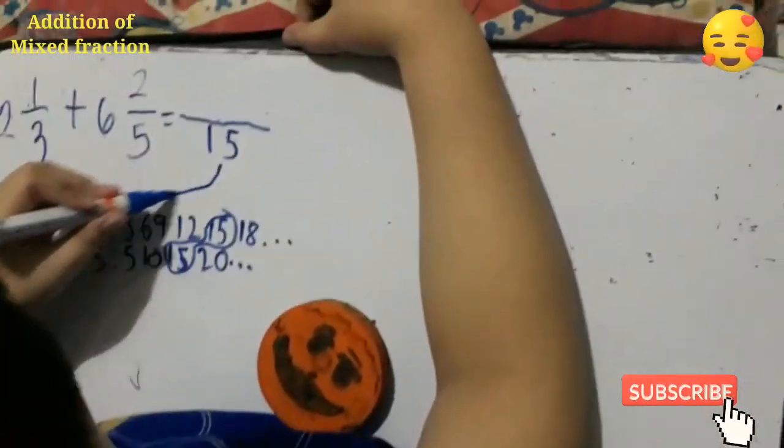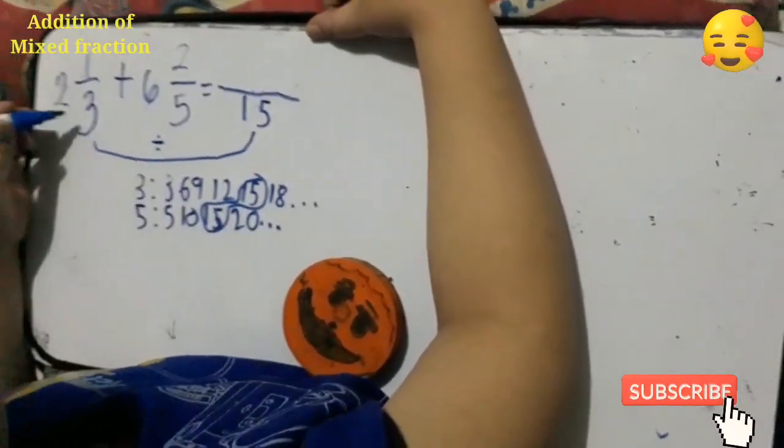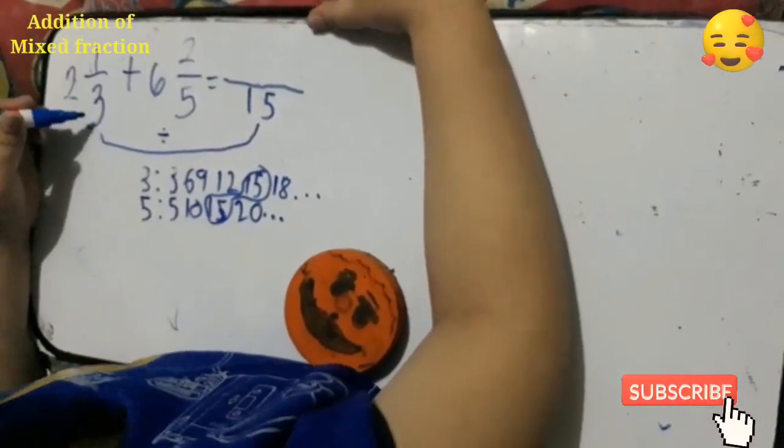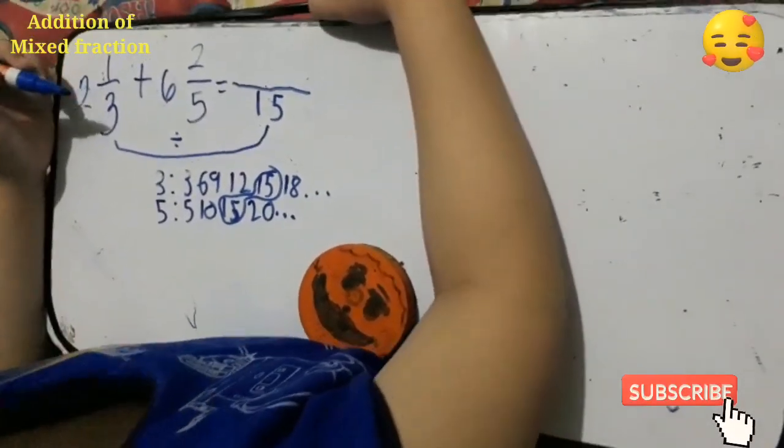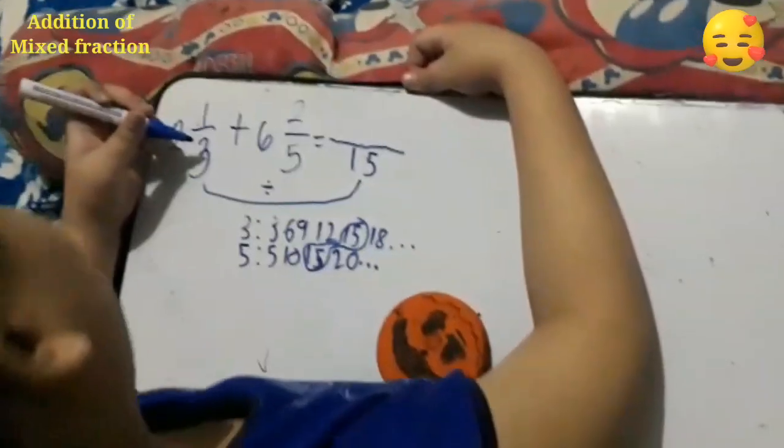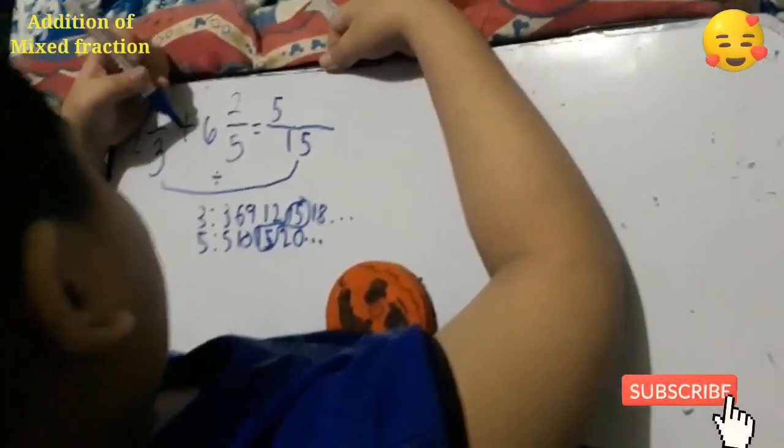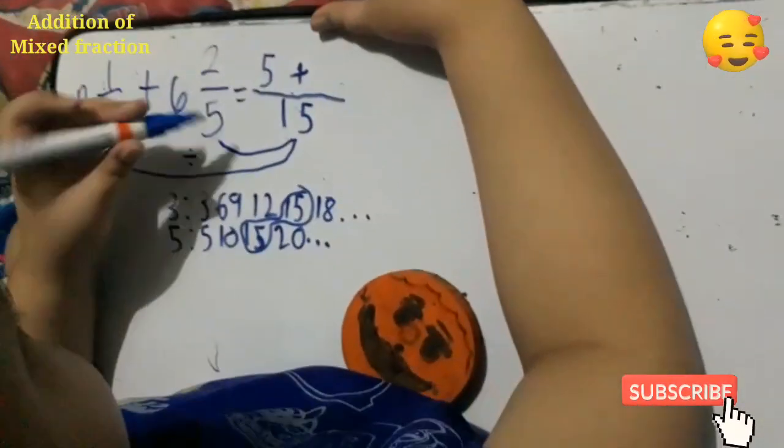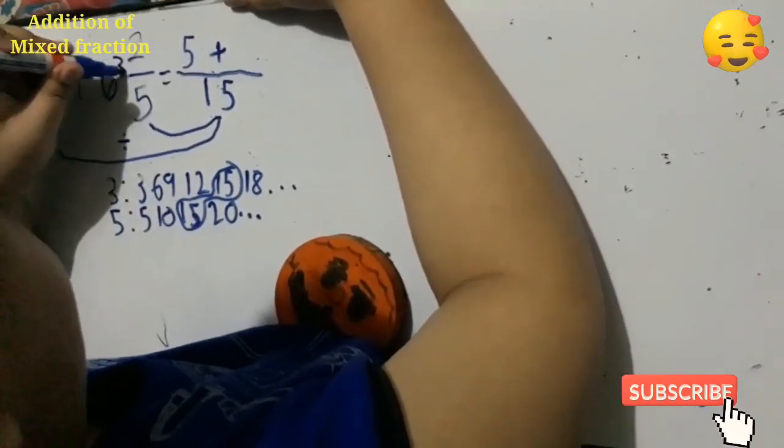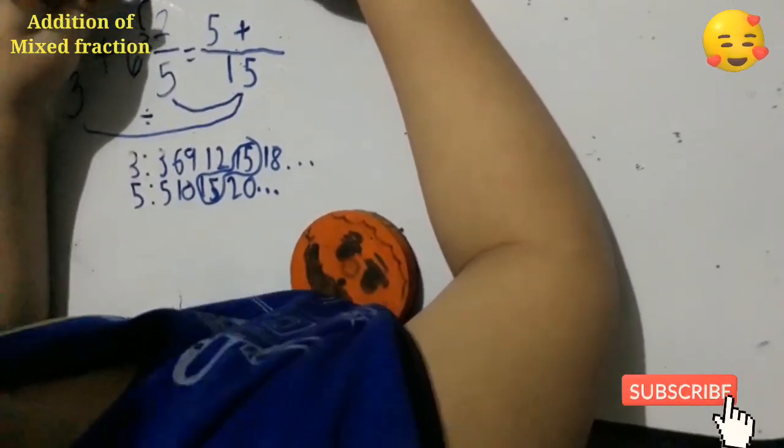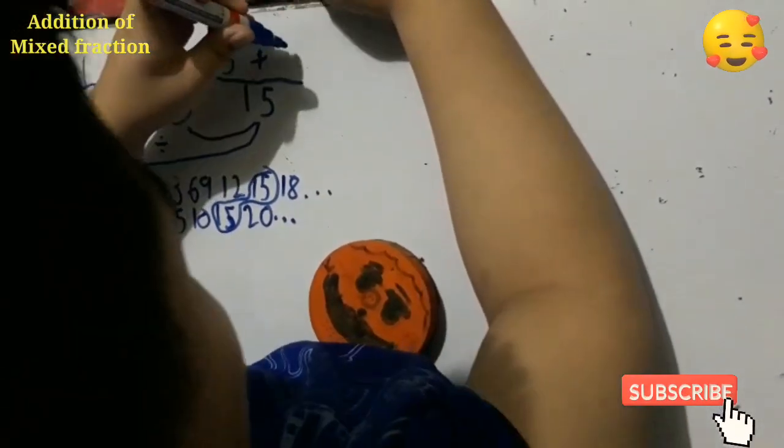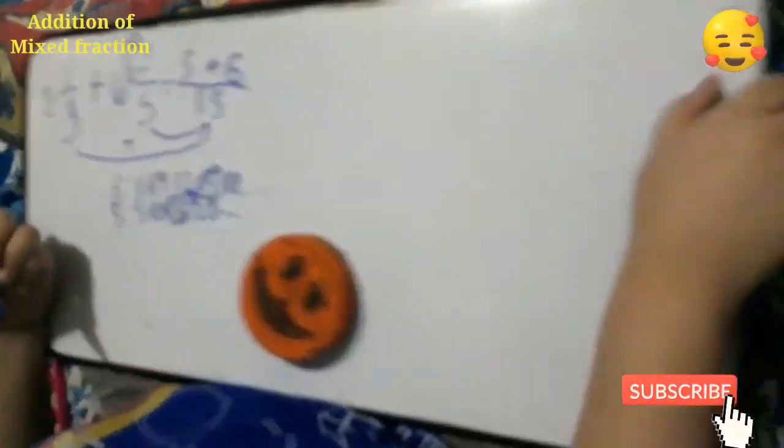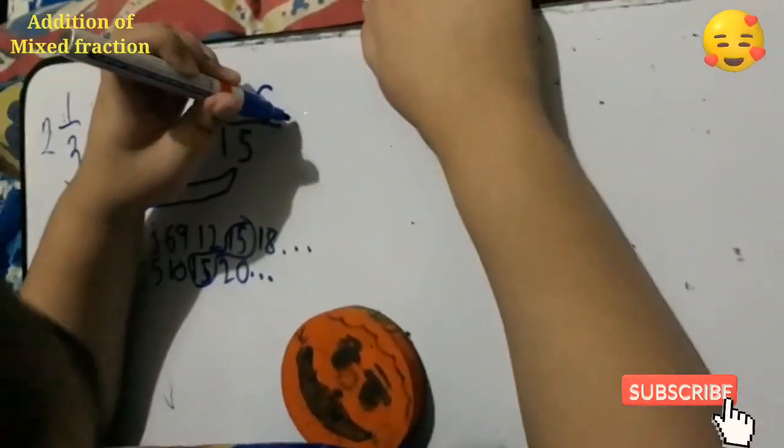Then we're going to divide it. 15 divided by 3 is equal to 5. 5 times 1 is 5. Copy the operation to be used. 15 divided by 5 equals 3. 3 times 2 is 6. After doing that, you're going to put here an equal sign.